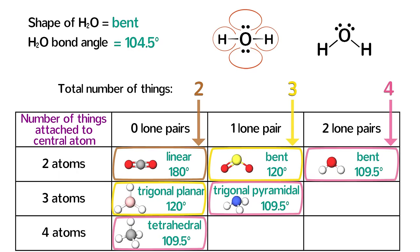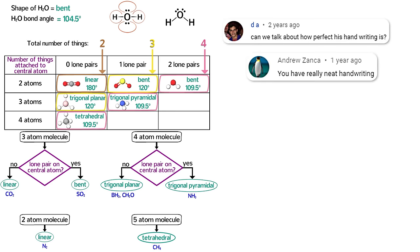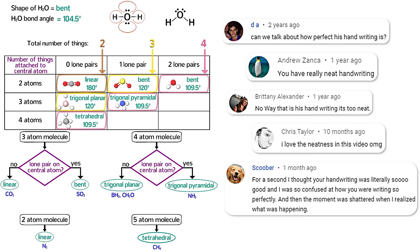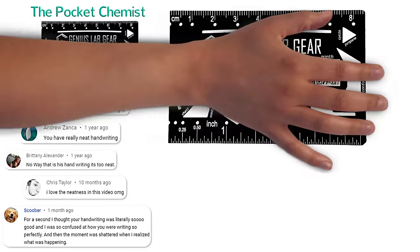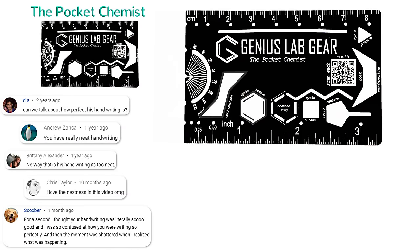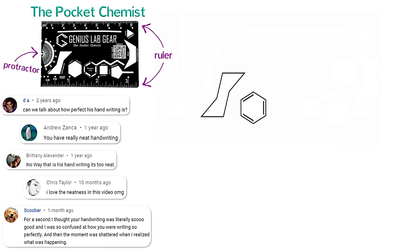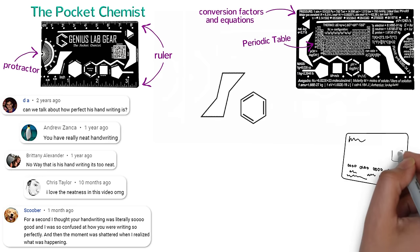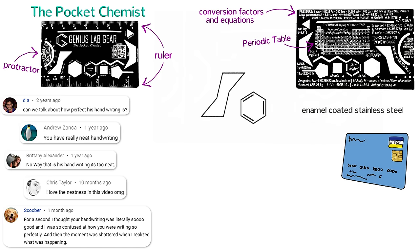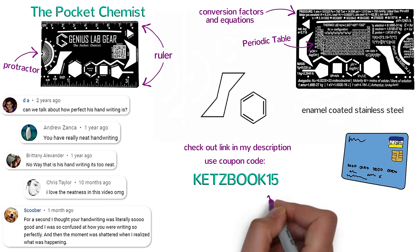One last thing — a shout out to listener DA, who wrote: 'Can we talk about how perfect his handwriting is?' I actually get that a lot. I have a secret though — I didn't draw it myself. A computer did. If you'd like to draw chemicals that neatly, there's a new tool called the Pocket Chemist made by Genius Lab Gear. It's great for drawing organic molecules like benzene, cyclohexane, or just about anything. There's also a ruler, a straight edge, a protractor for measuring and drawing bond angles, and more. The back has a periodic table and useful conversion factors and equations. The Pocket Chemist is the size of a credit card and made of enamel-coated stainless steel. Check out the link in the description and use coupon code KETZBOOK15 for 15% off.